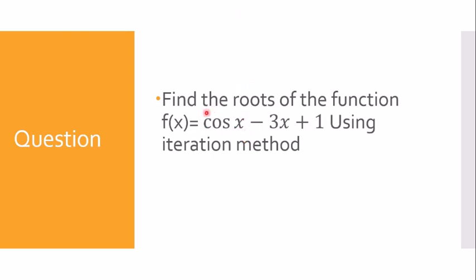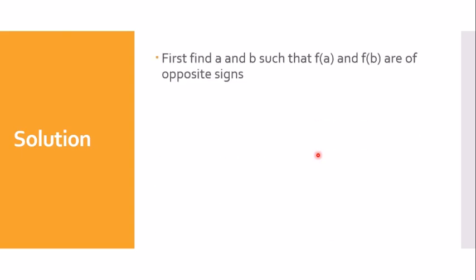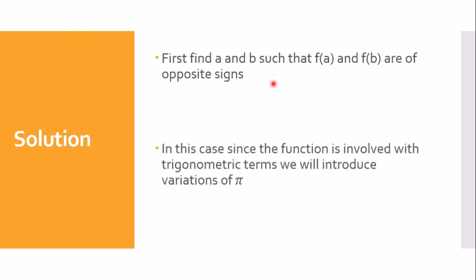Let's find out how to solve this equation. The steps we take here are the same as in the previous problems, with a slight change when we consider a and b. The first step, as always, is to find a and b such that f(a) and f(b) are of opposite signs. Since the question hasn't provided any information regarding a and b, we will have to find them ourselves.